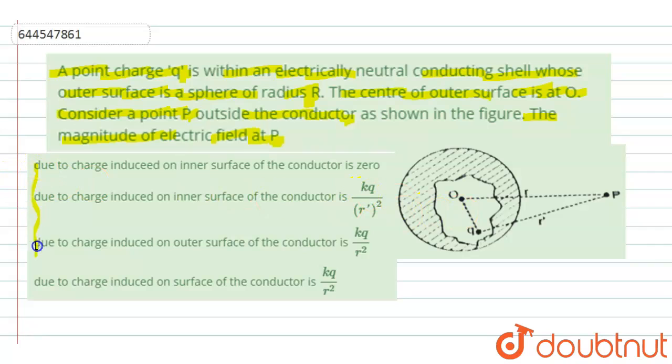Now see we are given 4 options here and we are given a neutral conducting shell like this and a point P where we have to find the magnitude of electric field. Now we are having a charge Q here, placed at a distance of R' from point P and the center of this sphere is at O.